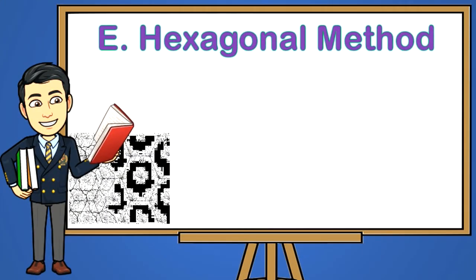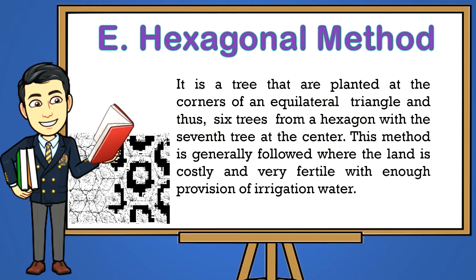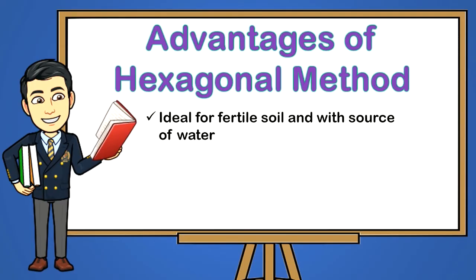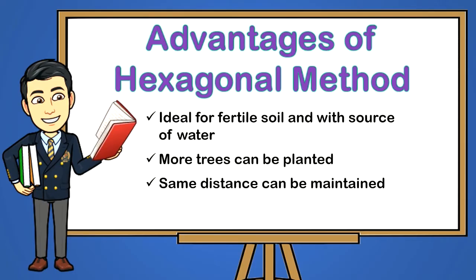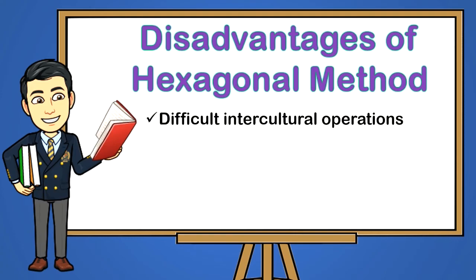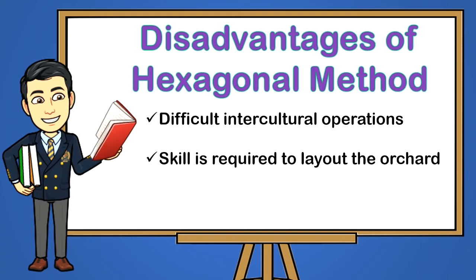E — Hexagonal Method. Trees are planted at the corners of an equilateral triangle, and thus six trees form a hexagon with the seventh tree at the center. This method is generally followed where the land is costly and very fertile with enough provision of irrigation water. Advantages: one, ideal for fertile soil and with a source of water; two, more trees can be planted; three, same distance can be maintained; four, more income can be obtained. Disadvantages: one, difficult intercultural operations; two, skill is required to lay out the orchard.